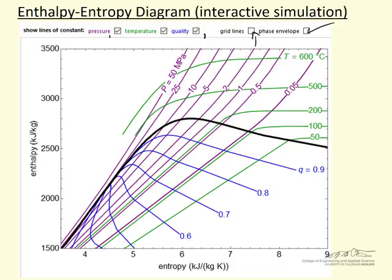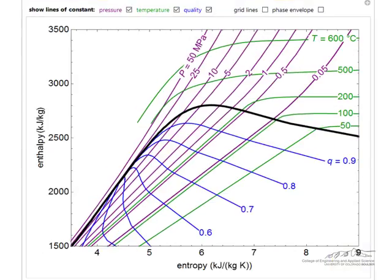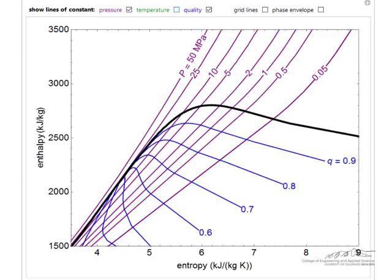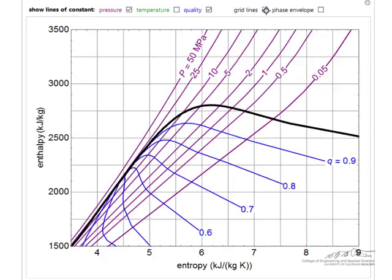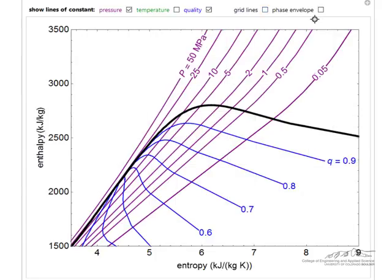So let's look at this interactive simulation and the behavior as we check and uncheck some of these boxes. Here's the interactive simulation. Let's for example remove the constant temperature lines, make it a little clearer to see. If we want, we can add grid lines so we can read values off, but the main objective is to understand what this diagram represents, what constant pressure lines look like when they're not obscured by other lines.